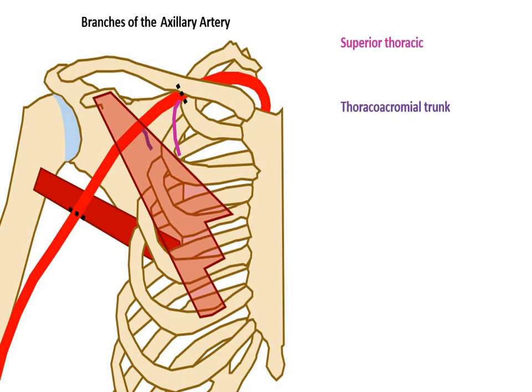Here is the thoracoacromial trunk. It divides to give several pectoral branches which go towards pectoralis major and minor, a deltoid branch that runs towards deltoid, a clavicular branch, and an acromial branch.